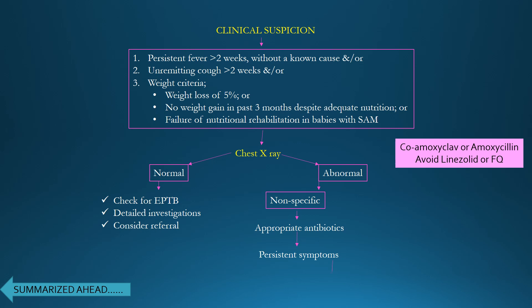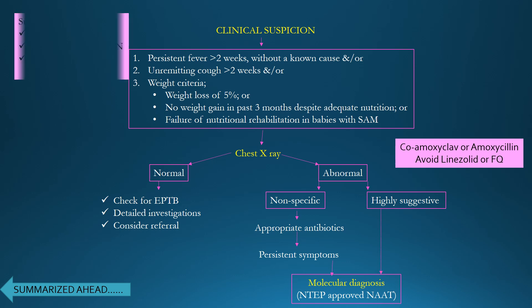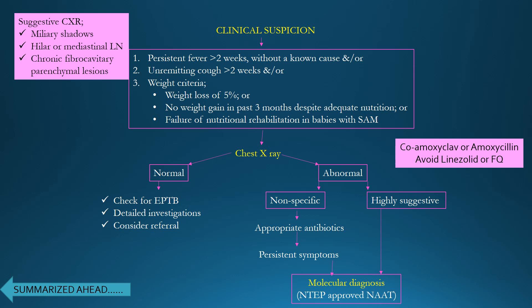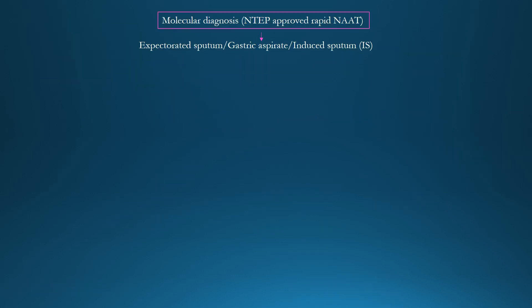If the patient still has symptoms after antibiotics, or if the chest X-ray shows findings highly suggestive of tuberculosis, subject the patient to molecular diagnosis using NTEP-approved tests. Chest X-ray findings highly suggestive of TB include miliary shadows, hilar/mediastinal lymphadenopathy, and chronic fibrocavitary parenchymal lesions. Molecular diagnosis should be done on expectorated sputum, gastric aspirate, or induced sputum using 3% or hypertonic saline.